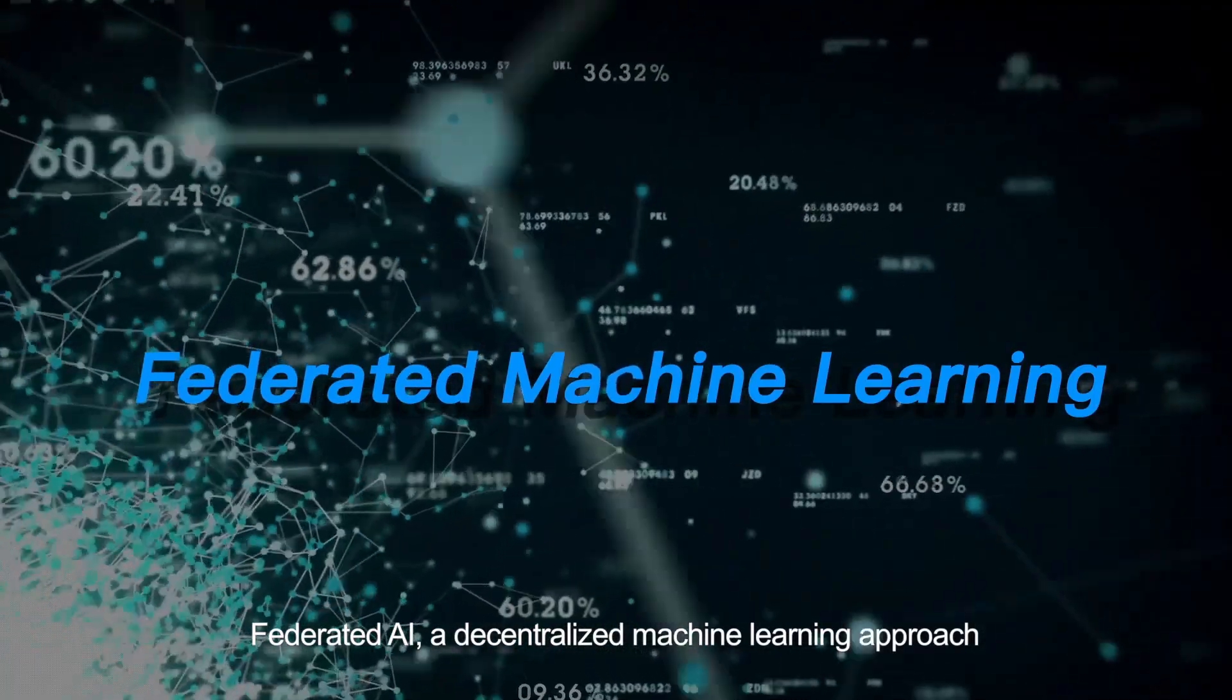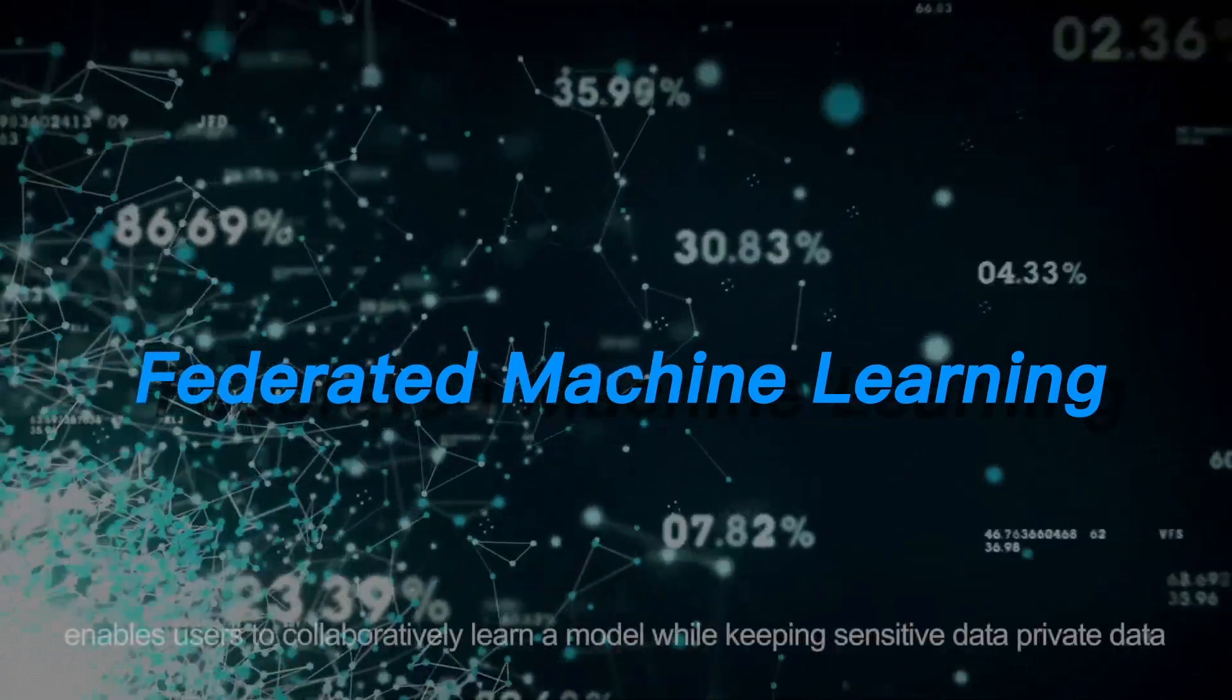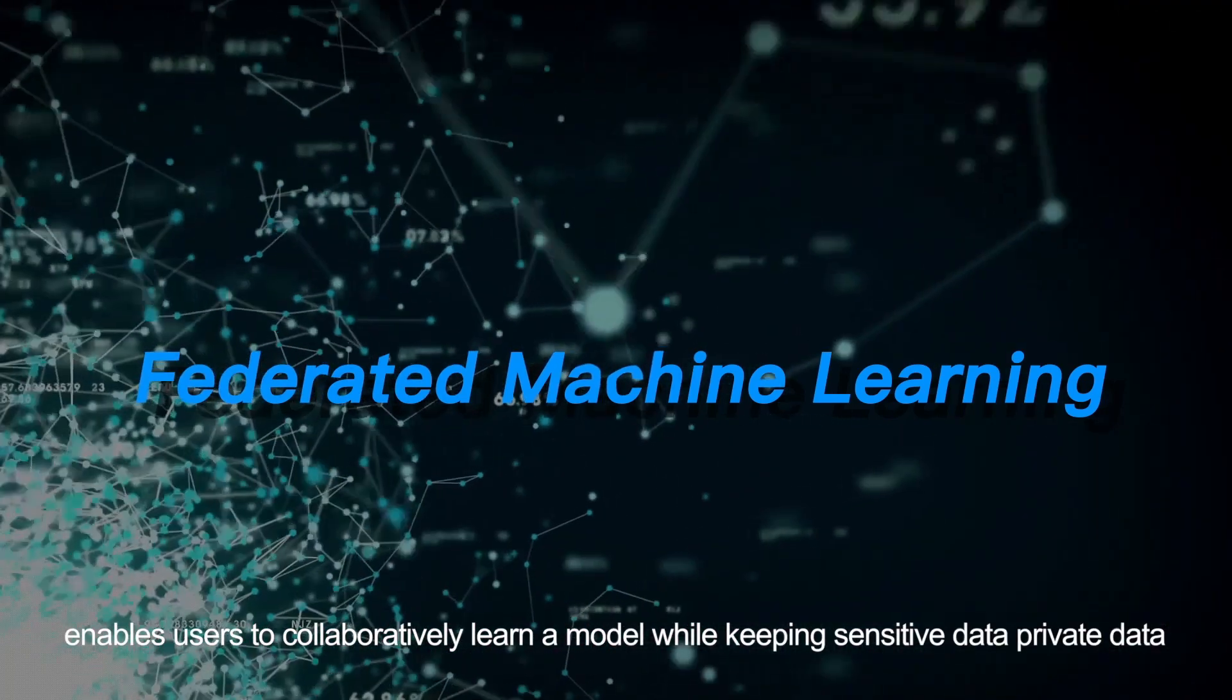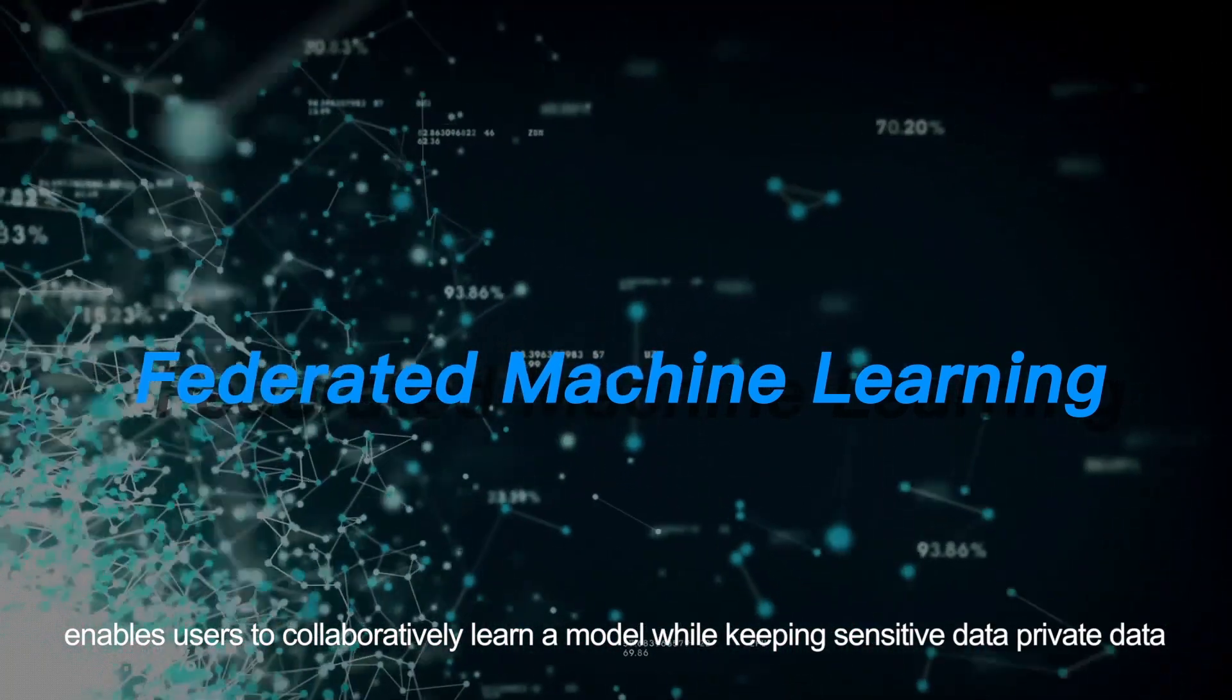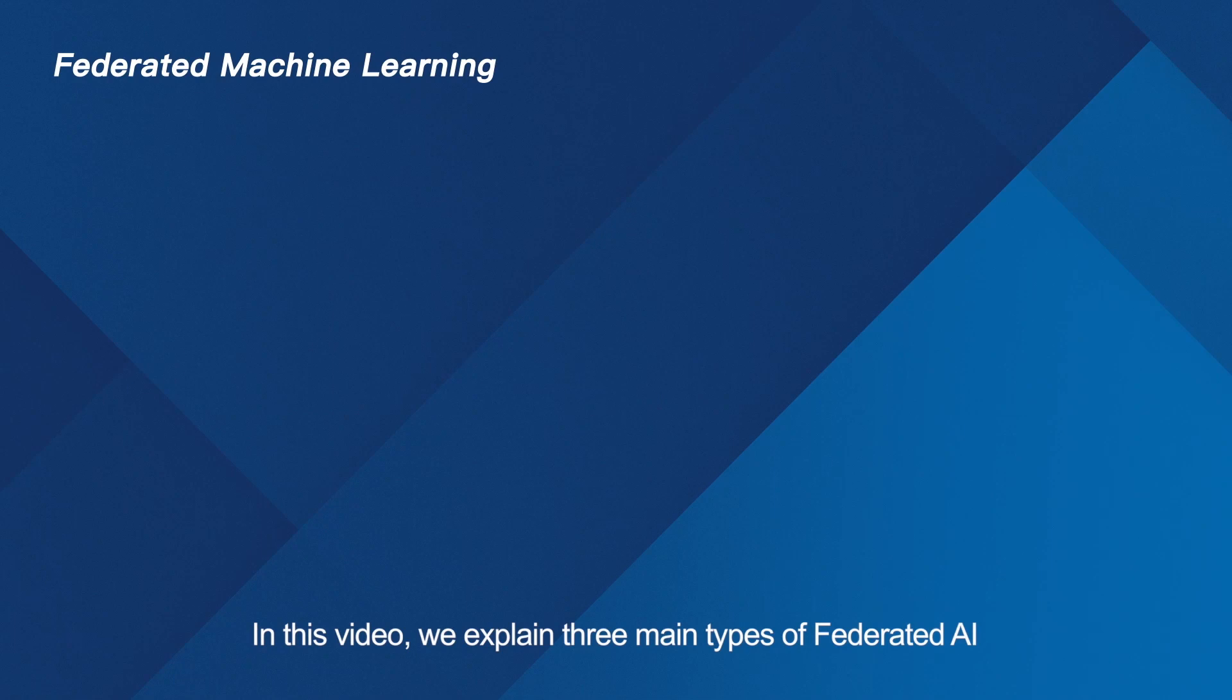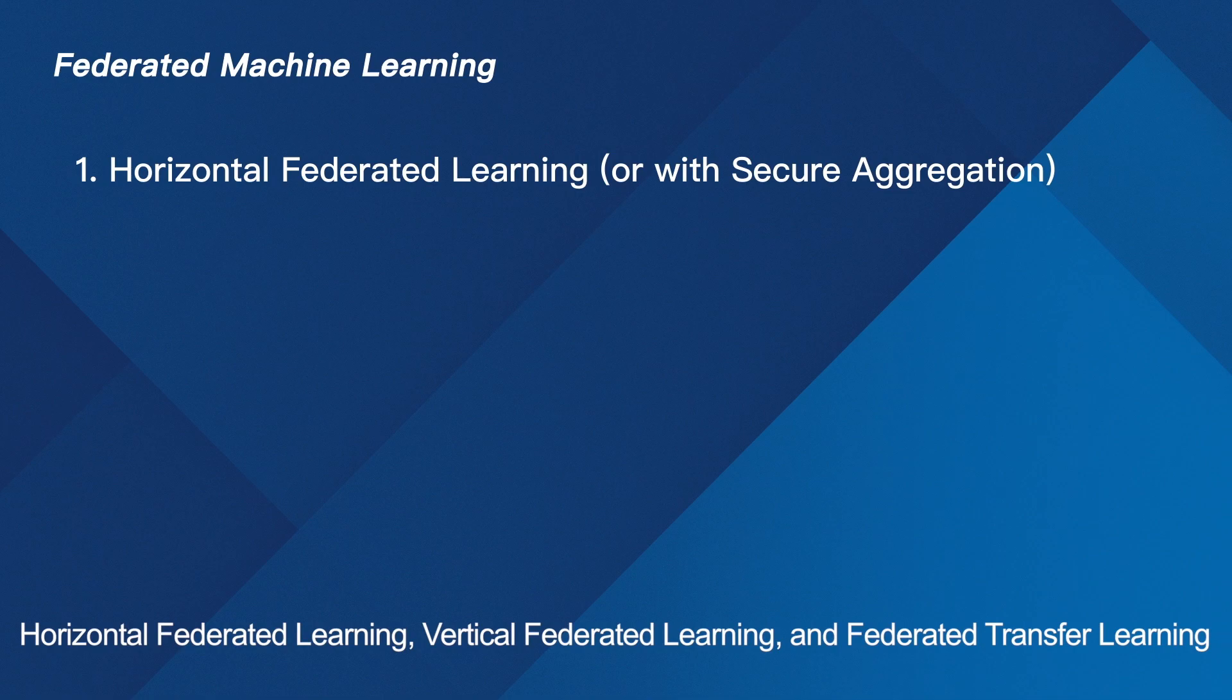Federated AI, a decentralized machine learning approach, enables users to collaboratively learn a model while keeping sensitive data private. In this video, we explain three main types of Federated AI: Horizontal Federated Learning, Vertical Federated Learning, and Federated Transfer Learning.